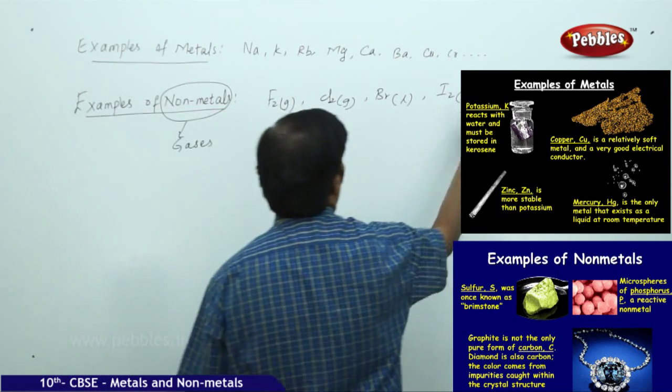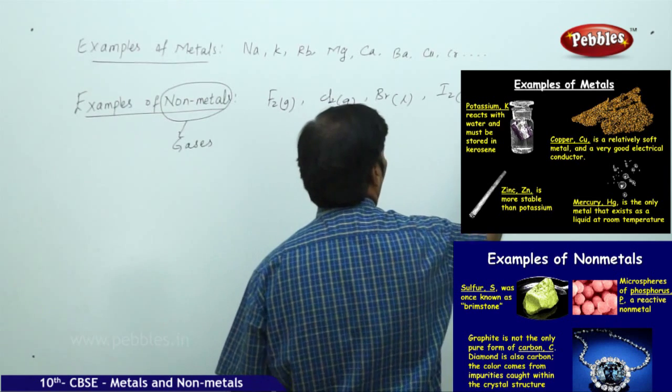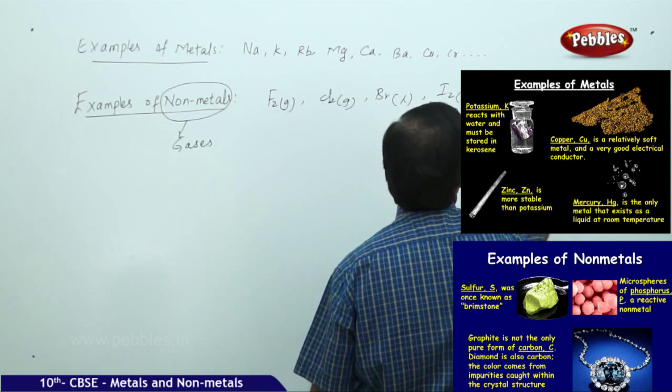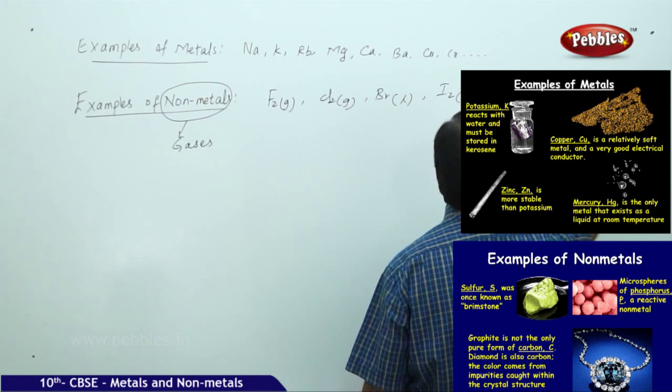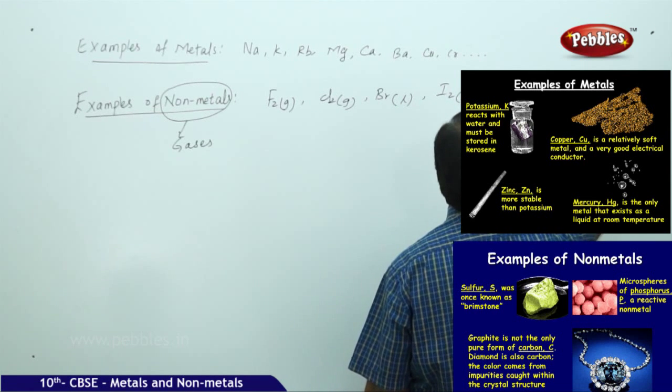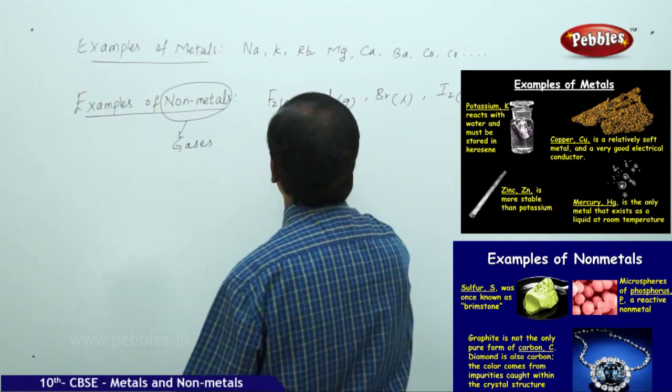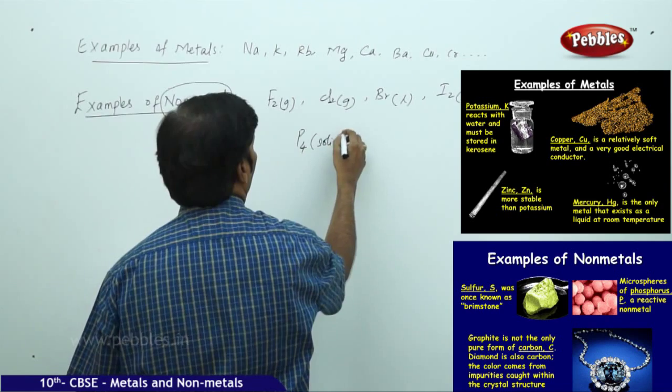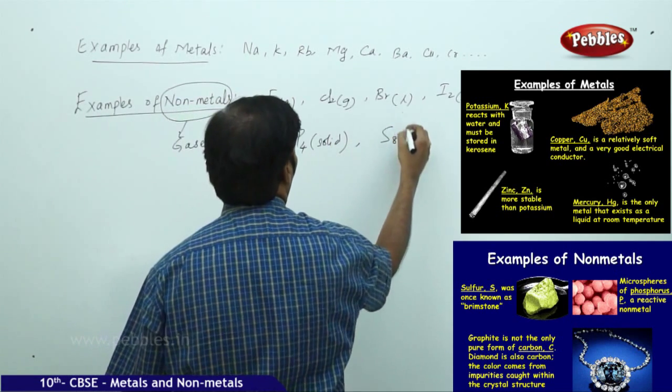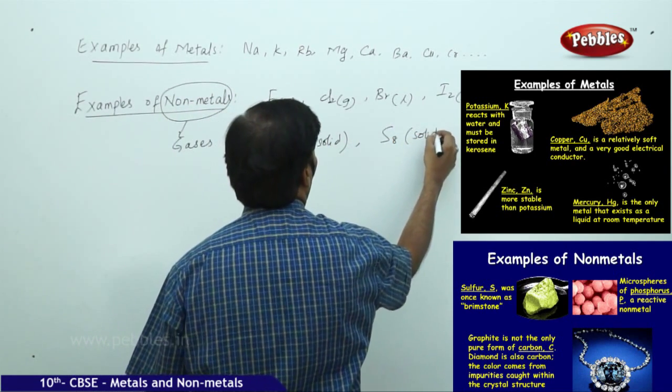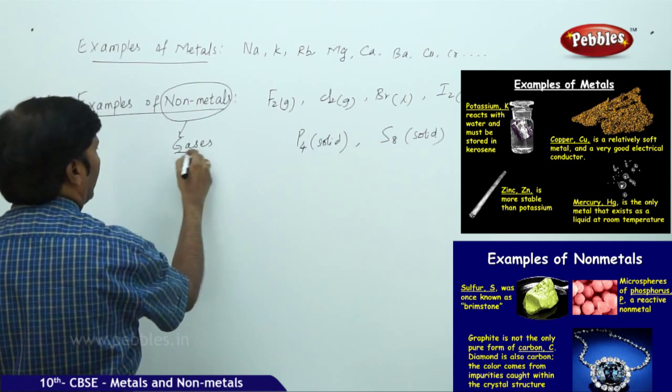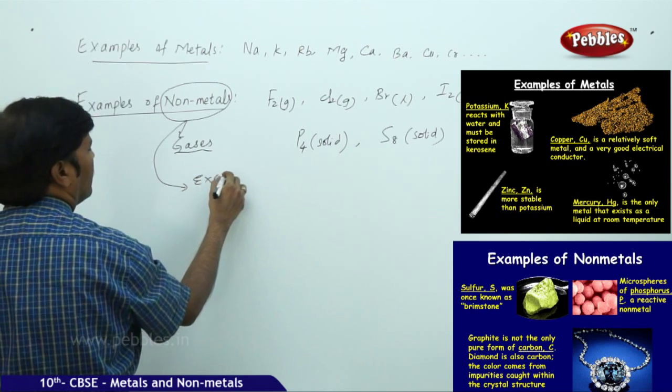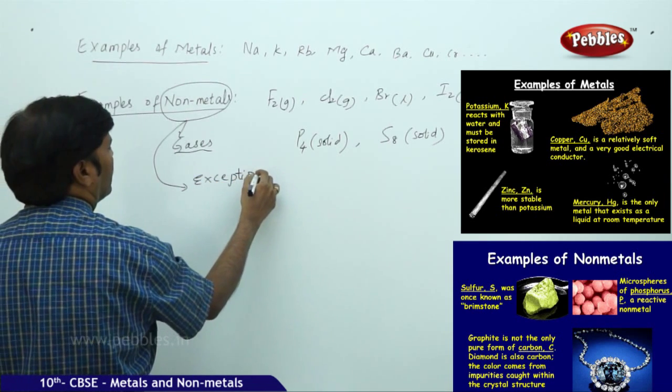But sometimes, if you take non-metals like carbon, carbon is available in the form of diamond, and carbon is also available in the form of graphite. You can take P4 - phosphorus is a solid, sulfur is also a solid. In general, all non-metals are gases, but if you take exceptions...